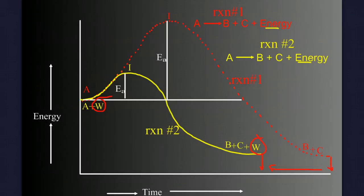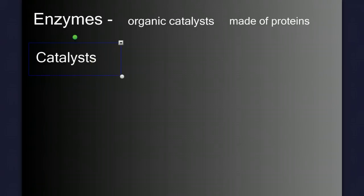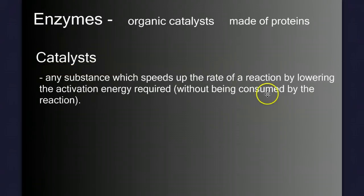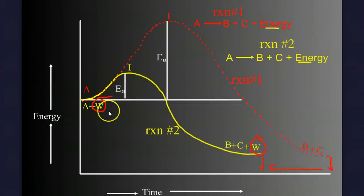Which brings us finally to enzymes. Enzymes are organic catalysts. They're made of proteins. So if we know an enzyme is an organic catalyst, we need to ask ourselves, what is a catalyst? Well, a catalyst is any substance that speeds up the rate of a reaction by lowering the activation energy required without being consumed by the reaction. The activation energy, like we said before, is the amount of energy needed to start a reaction. So when we look back at this, substance W is an enzyme. Its presence speeds up the rate of this reaction by lowering the amount of activation energy required.